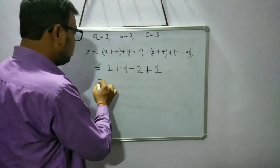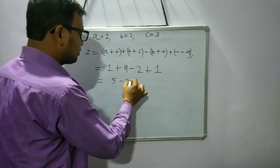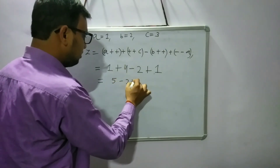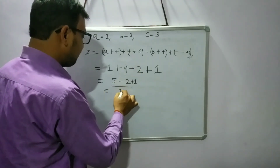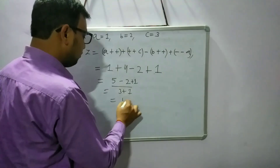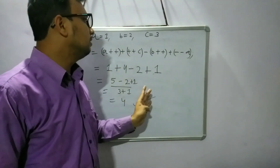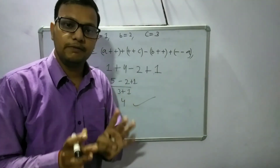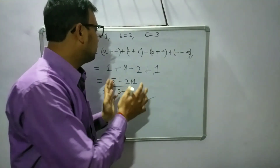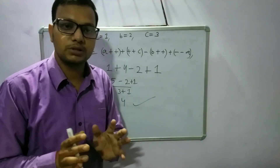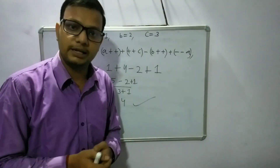Now we calculate: 4 + 1 = 5, then 5 - 2 = 3, and 3 + 1 = 4. So the result is 4. This is an example using prefix and postfix. With the help of this example, you can clear your doubts related to postfix and prefix increment or decrement operators.